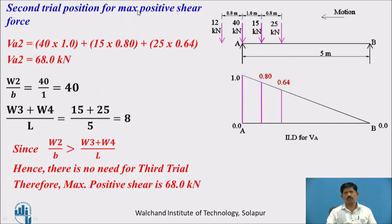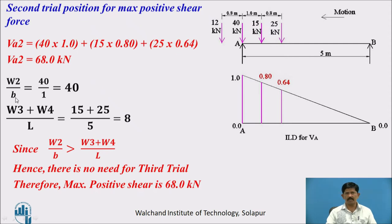For the second trial position, the first wheel rolls off and W2 is placed exactly at A. VA2 = 40×1 + 15×0.8 + 25×0.64 = 68 kN. Checking the condition: W2/b = 40/1 = 40, and (W3 + W4)/L = (15 + 25)/5 = 8. Since W2/b > remaining load ratio, the condition is satisfied — no third trial needed. Therefore the maximum positive shear is 68 kN.